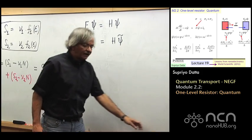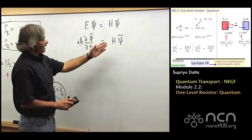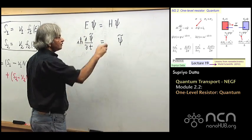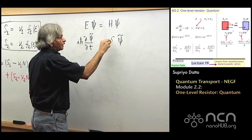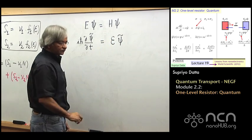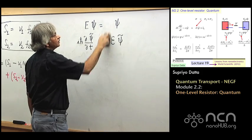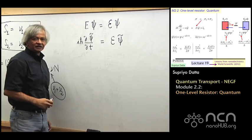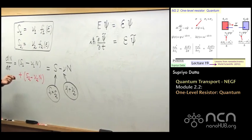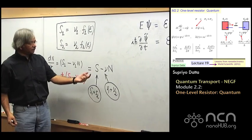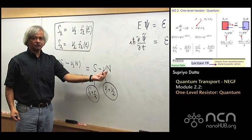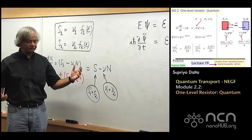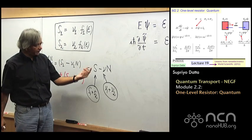Since we are doing a one-level device, the H is just a number — this epsilon psi. And when you connect the contacts, you expect to have kind of two terms: a term that would be proportional to the number of electrons, and then a term that would be like a source term that tells you what comes in from the contacts.